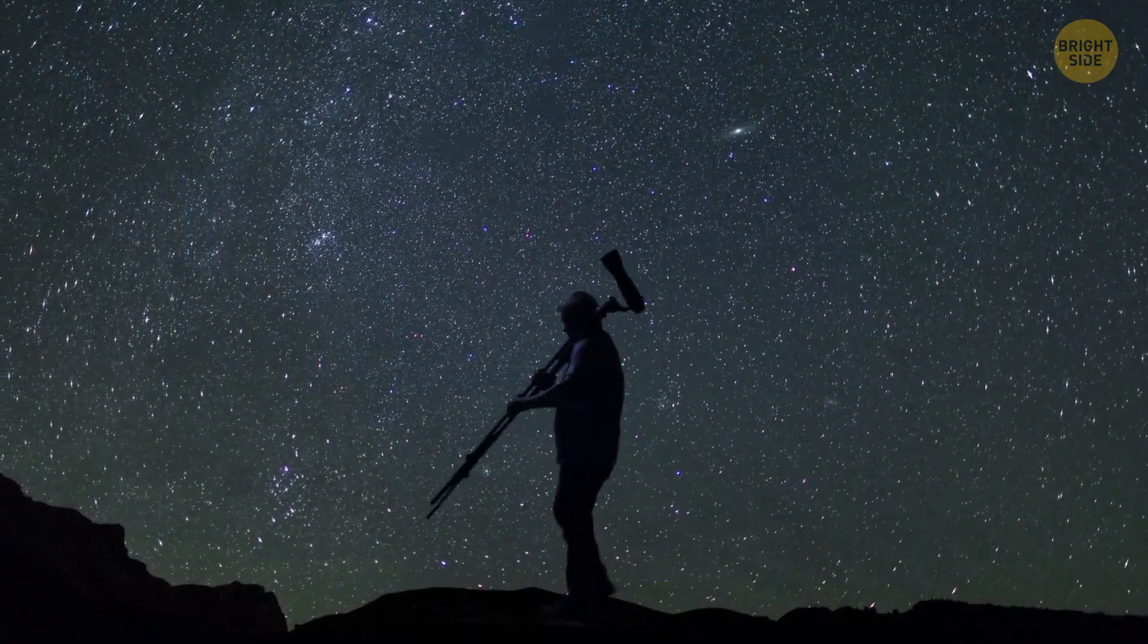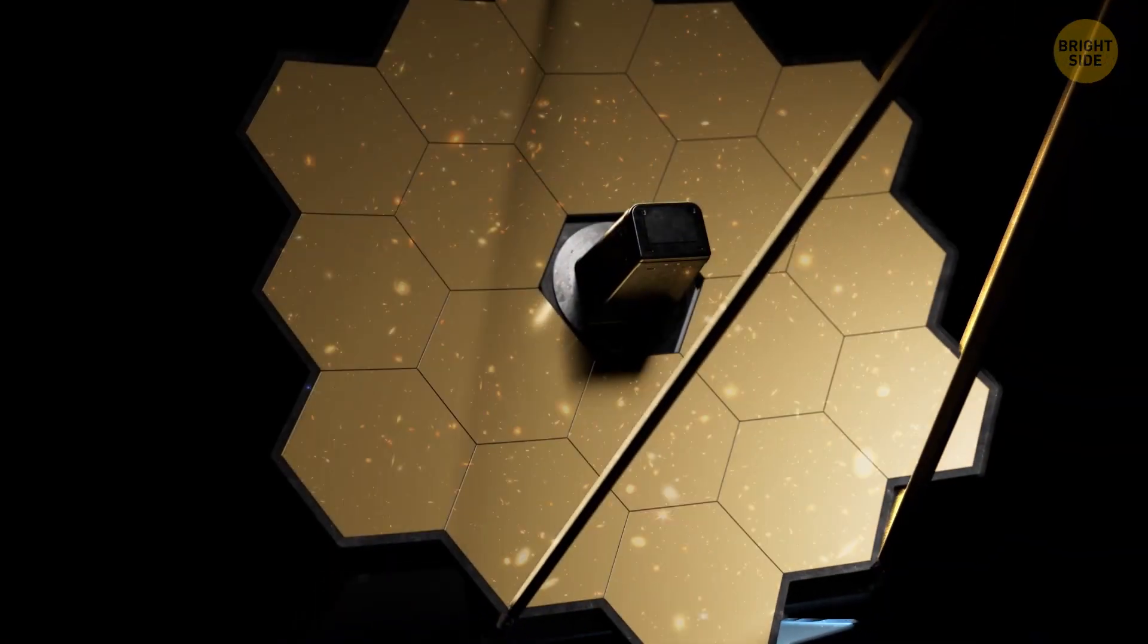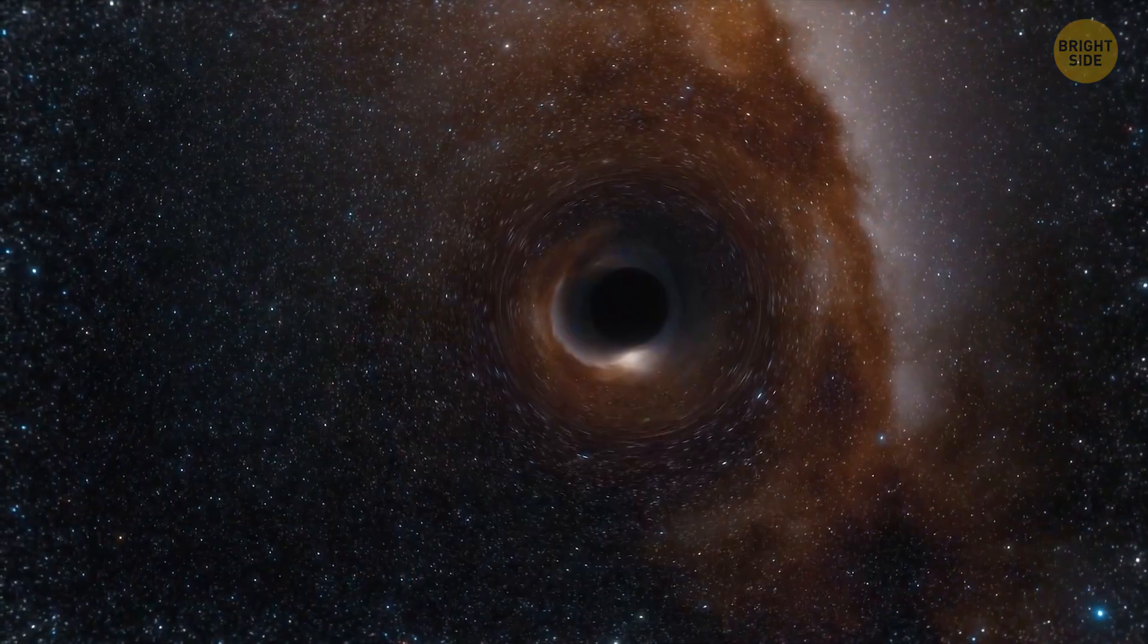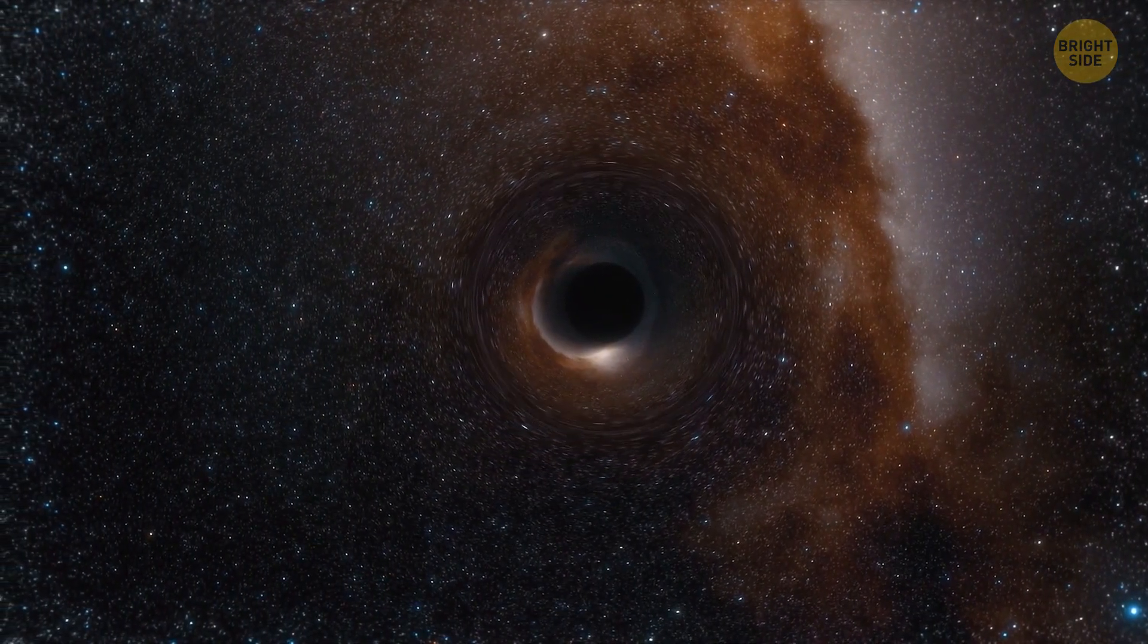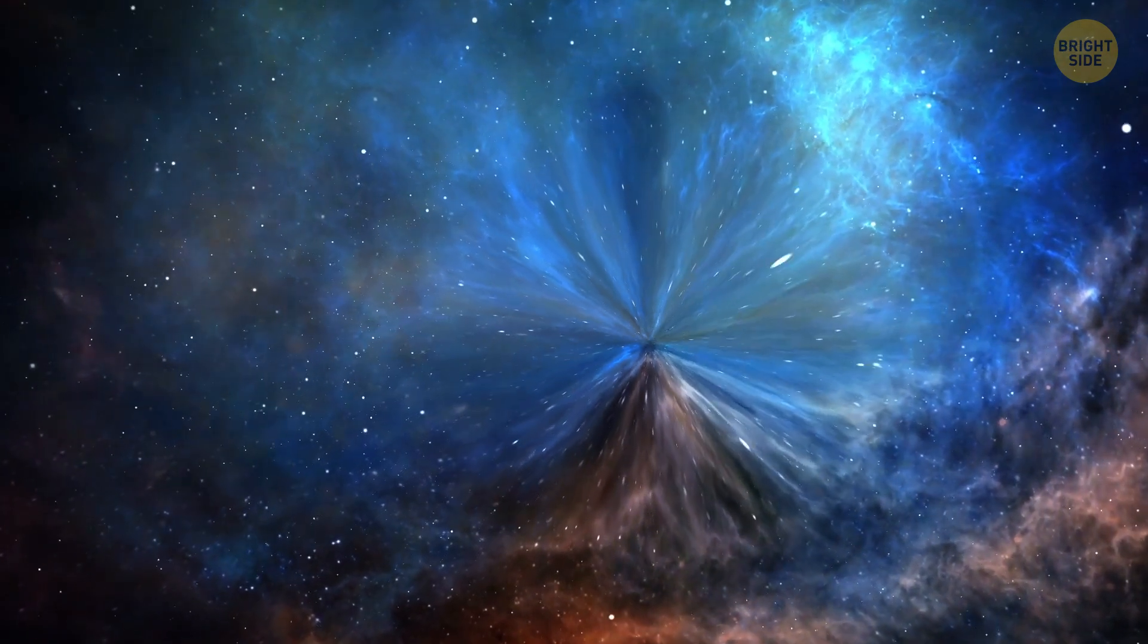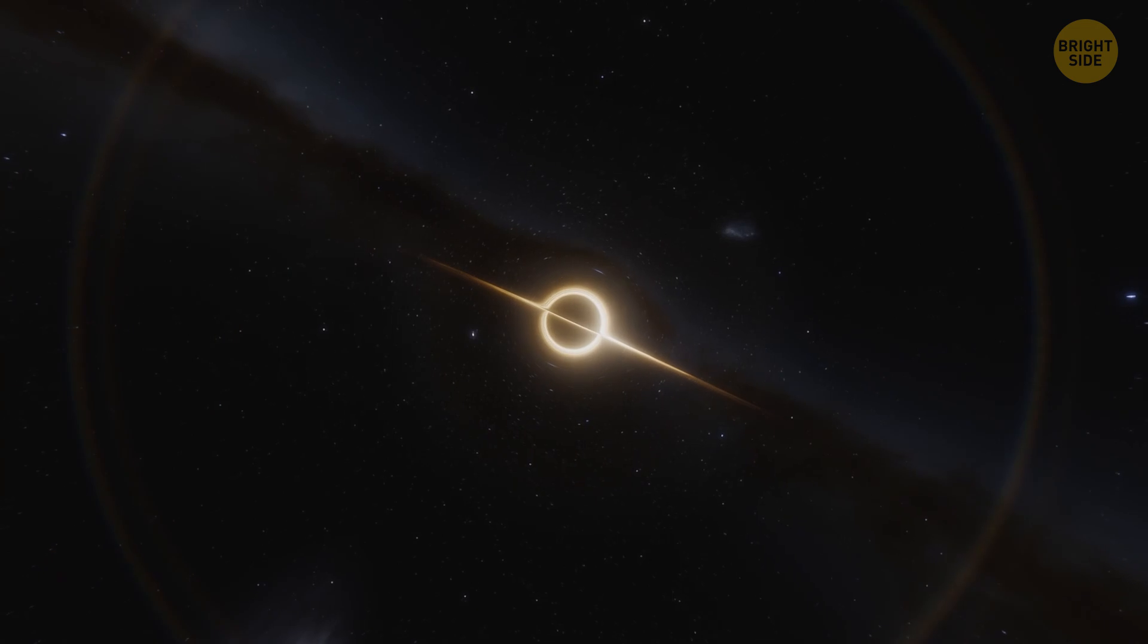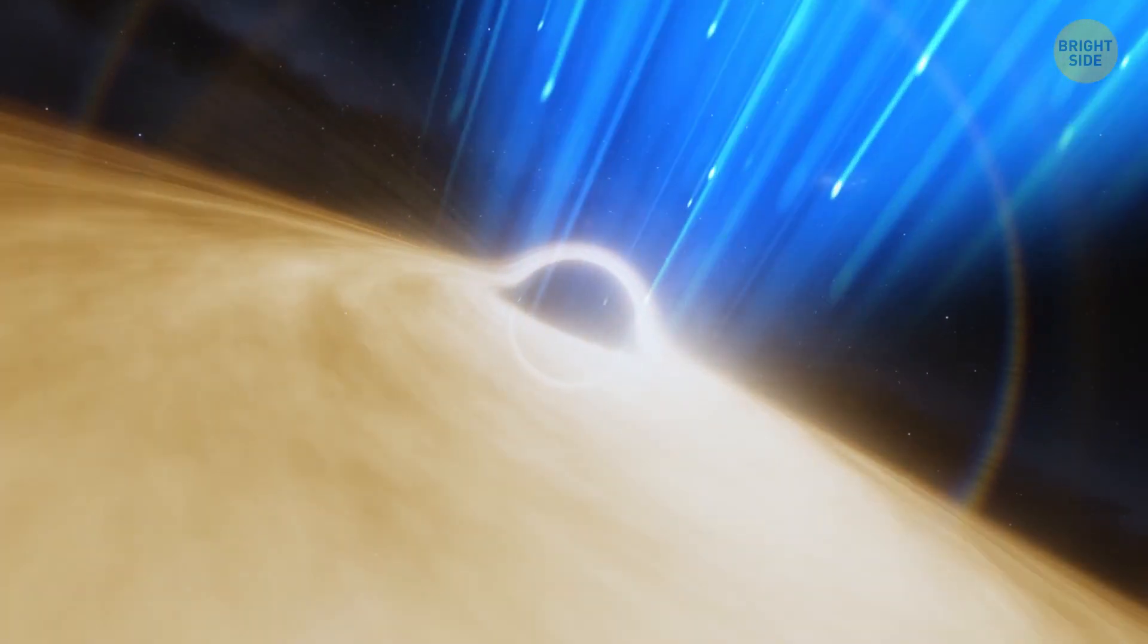As you already know, you can't see black holes directly, even with fancy telescopes that detect light, x-rays, or other types of electromagnetic radiation. But we can see what a black hole does to the things that surround it. For example, when a black hole passes through a cloud of space matter, it pulls everything towards itself in a process called accretion. As the matter is pulled in, it becomes hot and emits detectable x-rays.